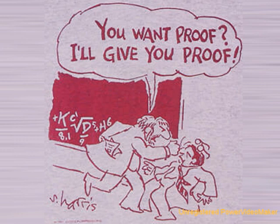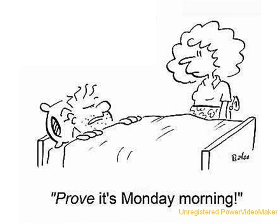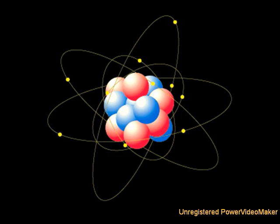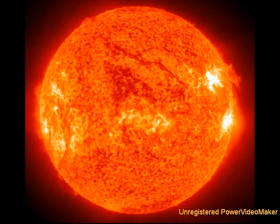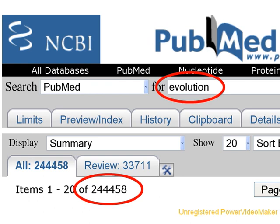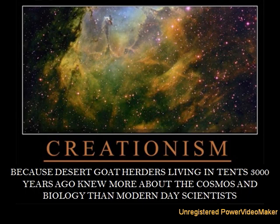Finally, some creationists will add that evolution can never be proven. This again exposes their profound ignorance of the sciences, as nothing in reality can ever be proven 100%, since a new piece of evidence can always come along to disprove any current idea. So no, the theory of evolution can never be proven 100% — and neither can the theory of gravity, atomic theory, germ theory, or the theory of heliocentrism, that idea that the sun is the center of the solar system. Evolution is a theory — the highest status an idea can ever reach in science — because it is currently supported by over 240,000 peer-reviewed scientific articles containing millions of independent verifiable facts collected by tens of thousands of scientists working over the past century and a half. It is disproved by none, and no better ideas have yet to be proposed.